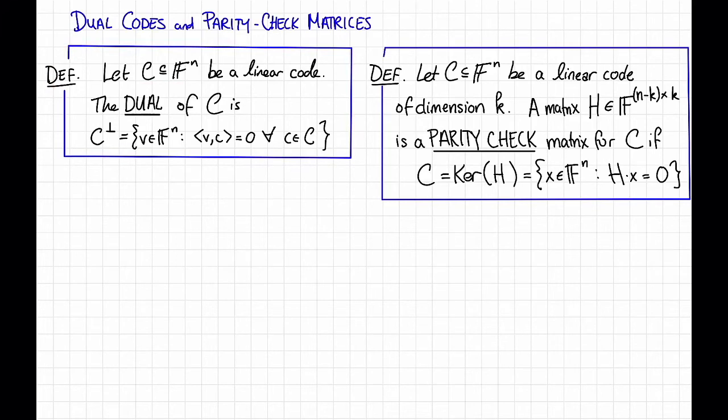We define the dual code to C as C perp, which we'll denote like this. C perp is equal to the set of all vectors v in f to the n, so that the inner product of v and c is equal to zero for all c in our code C. And here, this notation, this just means the sum from i equals one to n of v_i times c_i, so it's just the standard inner product.